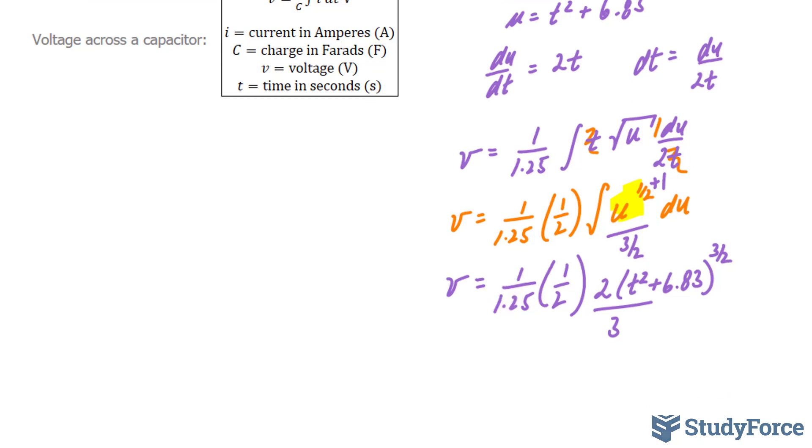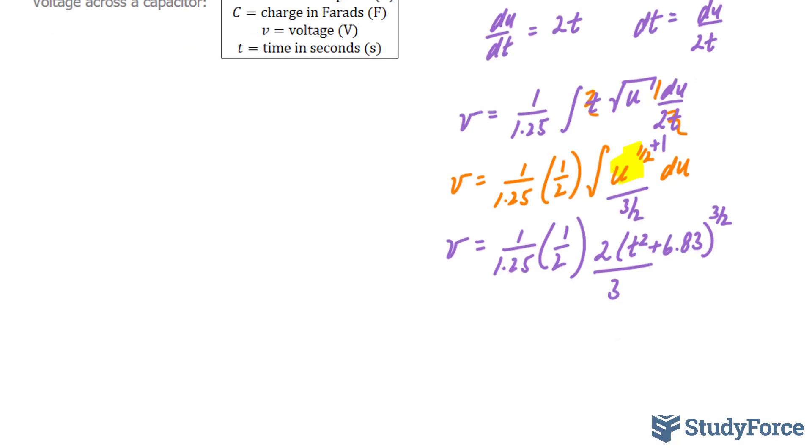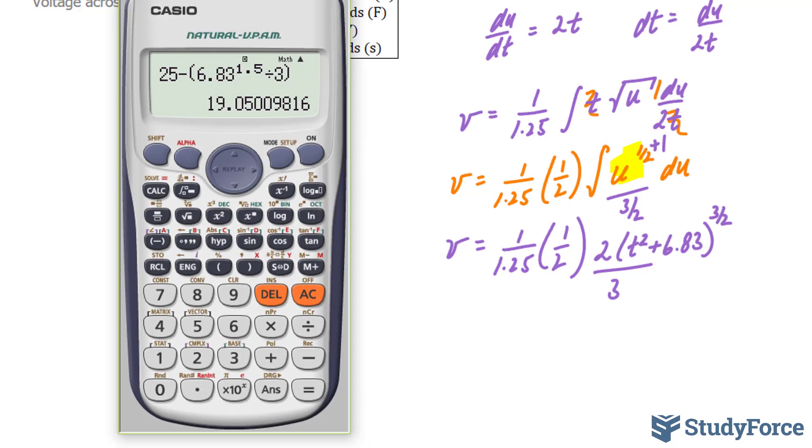Now you can clean this up a little bit, and here's how to do that. I'm going to multiply 1.25 with 2 with 3, and that will be my new denominator. Let's use my calculator, 1.25 times 2 times 3, that gives me 15 over 2, and that is equal to 7.5.